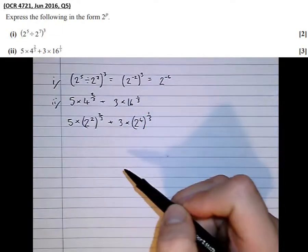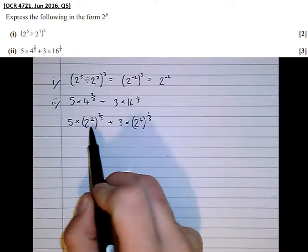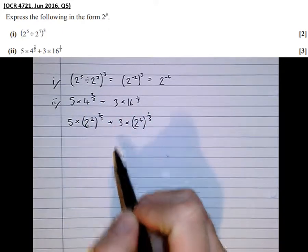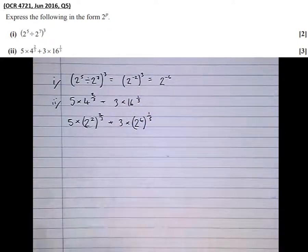So these two lines say exactly the same thing. We've got 5 times 4 to the 2 thirds plus 3 times 16 to the power of 1 third.